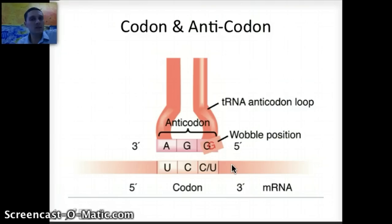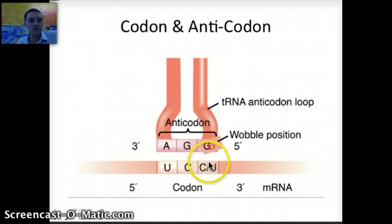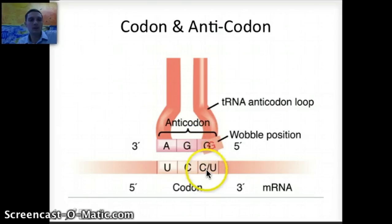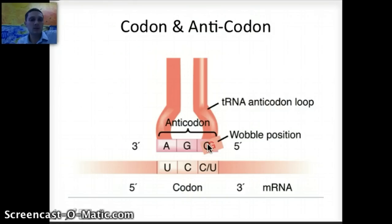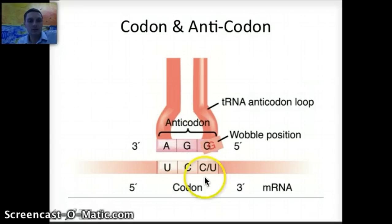The third nucleotide or nitrogen base on a codon is a little more flexible in terms of its matching — it's called the wobble position. The matching pairs on the codon and anticodon can sometimes flip-flop; for example, a uracil can match with a guanine. This helps explain why we see fewer tRNA molecules than there are codons, because transfer RNA matches with messenger RNA based on complementary pairs of the anticodon on the tRNA and the codon on the mRNA.